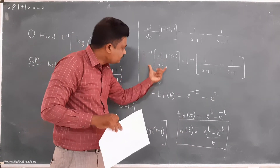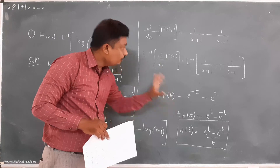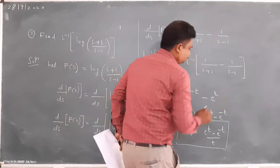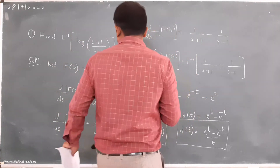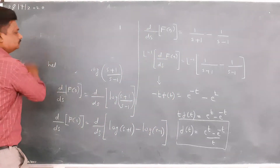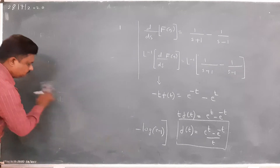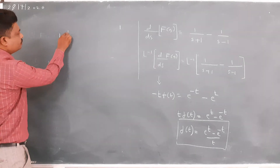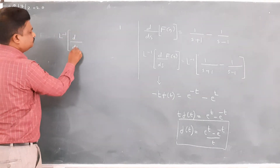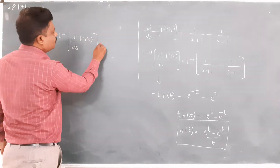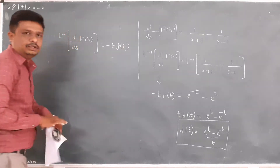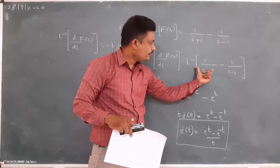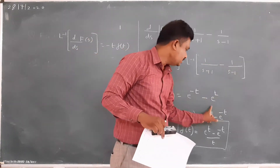The question is: for this I have written −t · f(t). For that I have used the result that L⁻¹{d/ds f(s)} = −t · f(t). By using this result I have written this as −t · f(t), and L⁻¹ of the first function is e^(−t) and the second one is e^(+t).